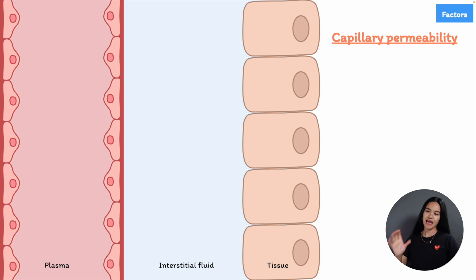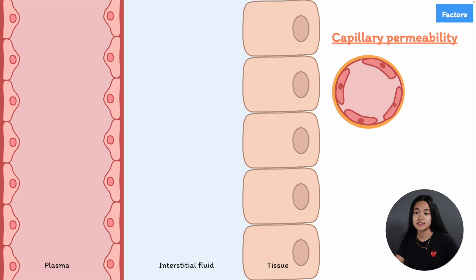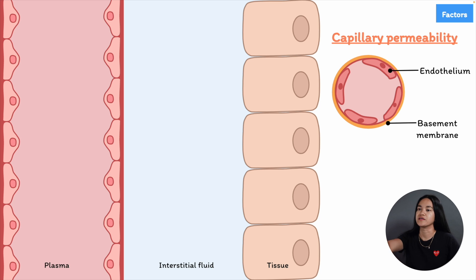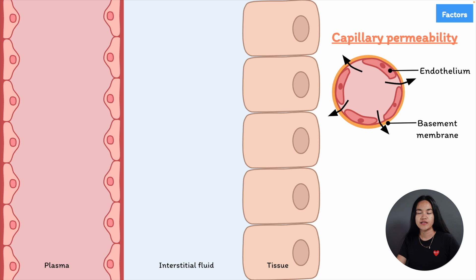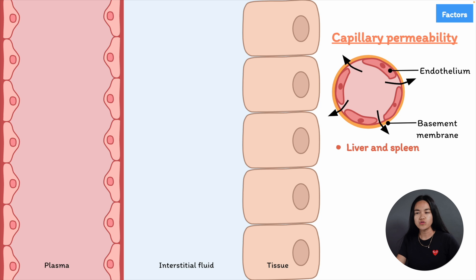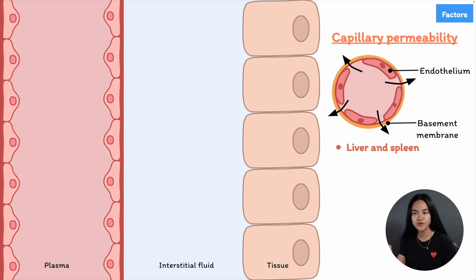The next factor is capillary permeability. Capillaries are the smallest blood vessels in the body, consisting of a single layer of endothelial cells surrounded by a basement membrane, allowing exchange of gases, nutrients, and waste products between the bloodstream and surrounding tissues. They exhibit varying degrees of permeability depending on their location and function. Fenestrated capillaries have pores or fenestrations in their endothelial cells, facilitating the exchange of larger molecules — as seen in the liver and spleen.